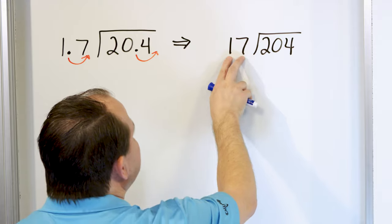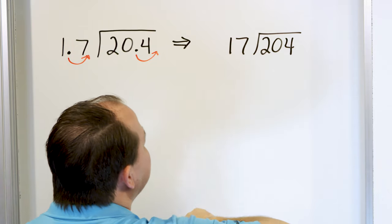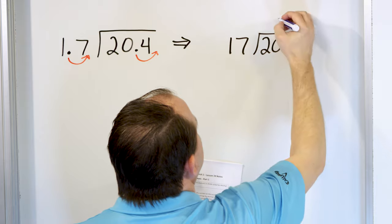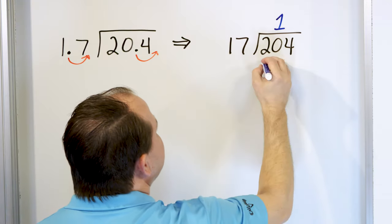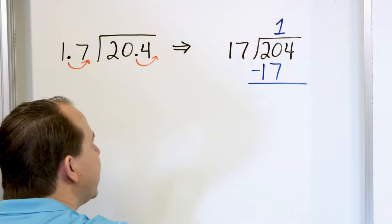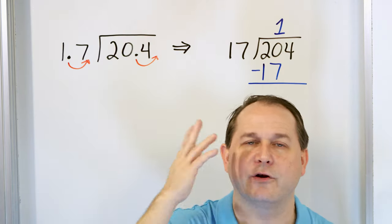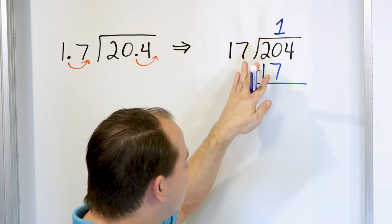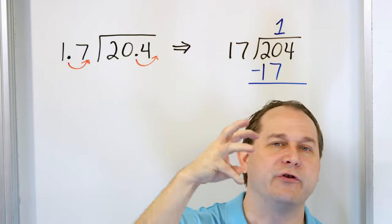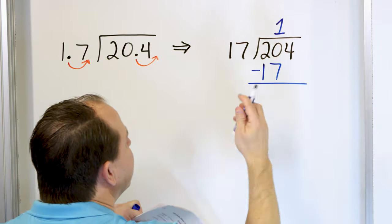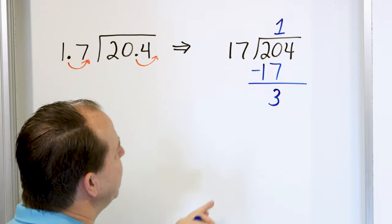Alright, how do we do long division? 17 divided into 2 — it can't go, 2 is not big enough. So consider 17 dividing into 20. It can only go one time — 17 is very close to 20. So we put a 1 right here over the zero. The next step is 1 times 17 — we put 17 here and subtract. You can think of subtracting 20 minus 17, which is 3. So we put a 3 down here.